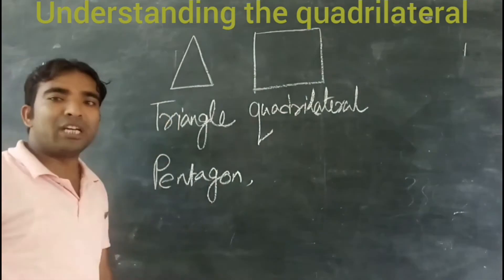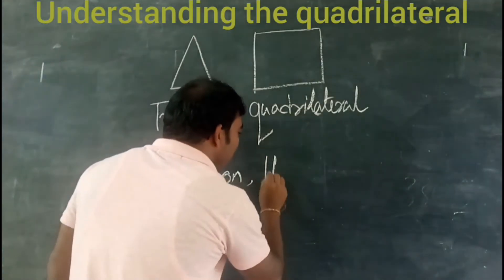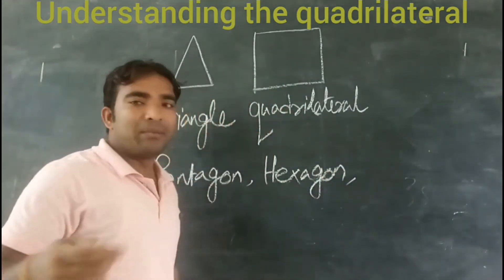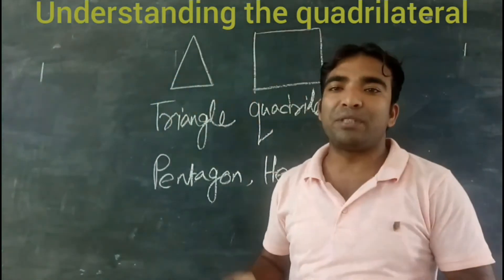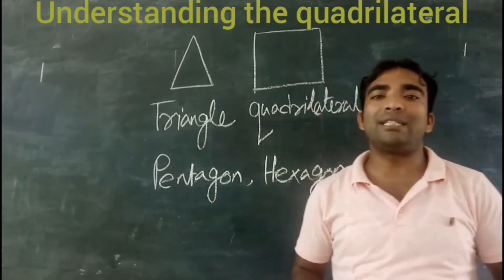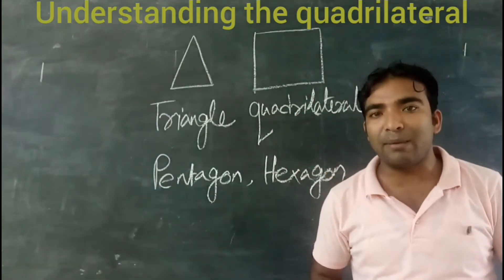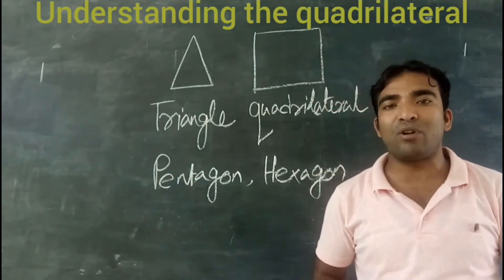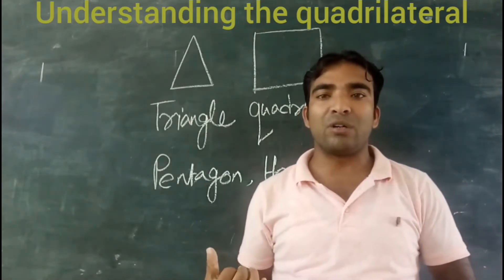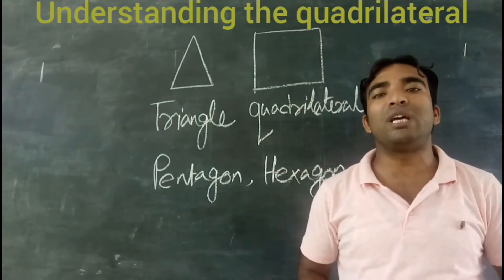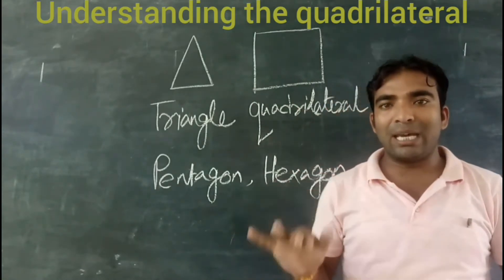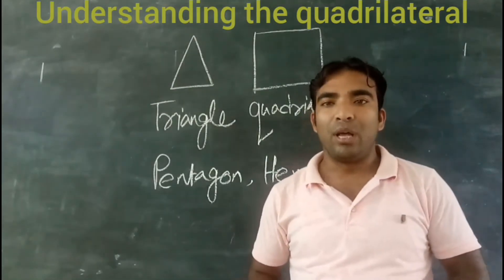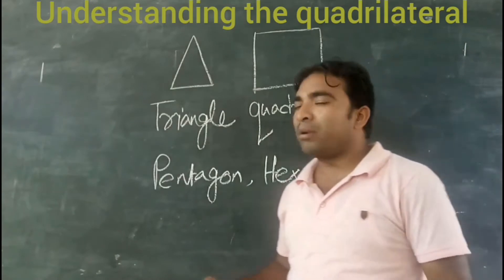When a polygon is made up of five sides, it is known as a pentagon. When a polygon is made up of six sides, it is known as a hexagon. Similarly, seven sides is a heptagon, eight sides is an octagon, nine sides is a nonagon, and ten sides is a decagon. Up to ten sides the specific classification names are given; the rest are all considered simple polygons.